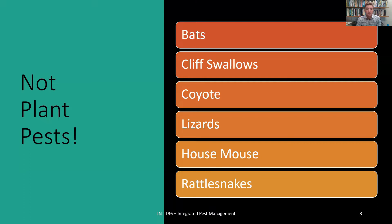A number of animals that people consider to be pests are not plant pests. Just because some may be a nuisance in the urban landscape, or may be disease-causing agents or vectors of disease, doesn't mean they are horticultural pests. Sometimes those same animals can be horticultural benefits because they are predators or pollinators. In general, the more biodiverse a habitat, the more balanced it will be.